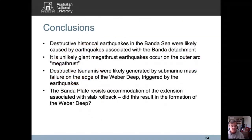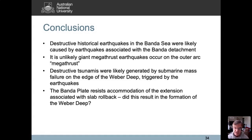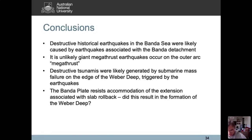In conclusions: The destructive historical earthquakes in the Banda Sea were likely caused by earthquakes associated with the Banda Detachment. It is unlikely that giant megathrust earthquakes occur on the outer megathrust because, as John Pownall says, there is no megathrust there. The destructive tsunamis were most likely generated by submarine mass failure on the edge of the Weber Deep, triggered by earthquakes — but potentially occurring spontaneously, an important point for tsunami warning. Finally, more speculatively, the Banda plate may resist accommodation of extension associated with slab rollback because it's pinned between the Australian and Philippine plates, possibly explaining why the Weber Deep forms rather than the Banda plate simply breaking apart.